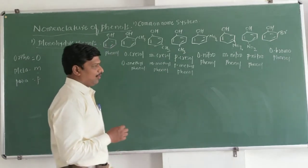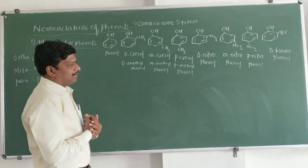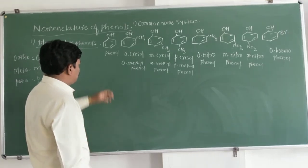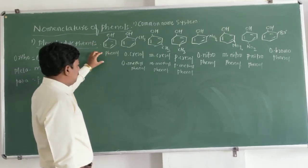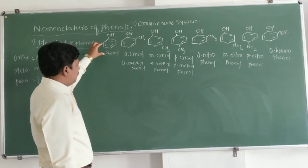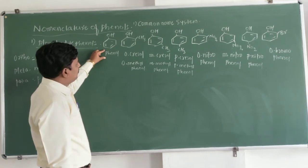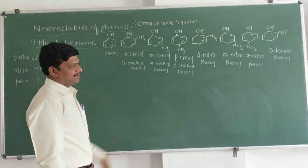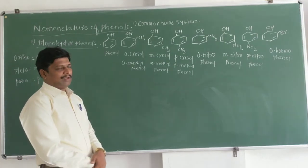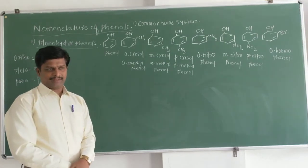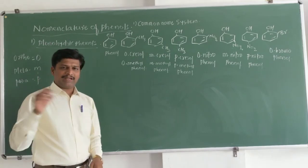Now we will discuss the IUPAC names. According to IUPAC nomenclature, numbers are given to the carbon atoms. This rule applies to IUPAC compounds — in aliphatic compounds we select the longest chain and give numbers to the carbon atoms present in it.